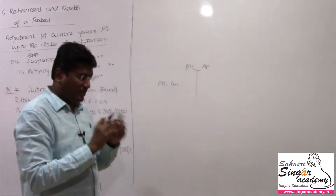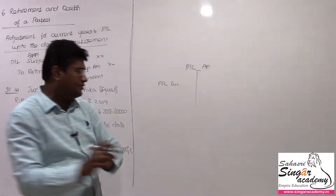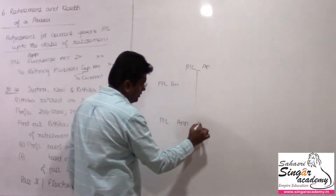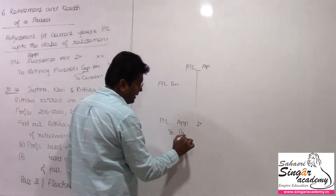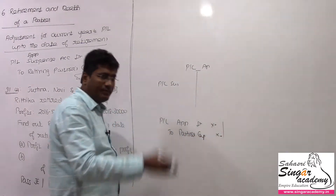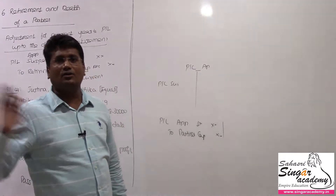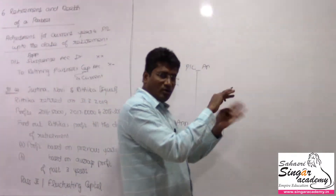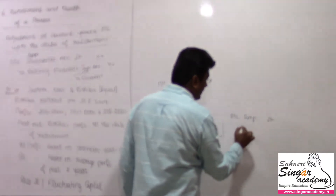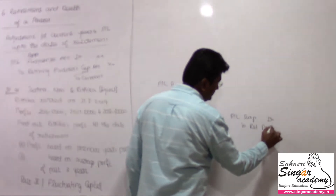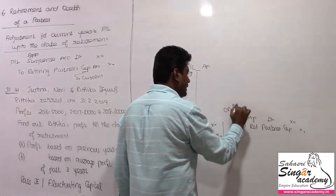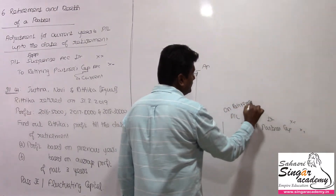What we usually do is: profit and loss share goes to the P&L Appropriation account, then debit to Partners Capital account. But on retirement, when we have a P&L Appropriation account, we debit to the Retiring Partner's Capital account. This is the journal entry on retirement.